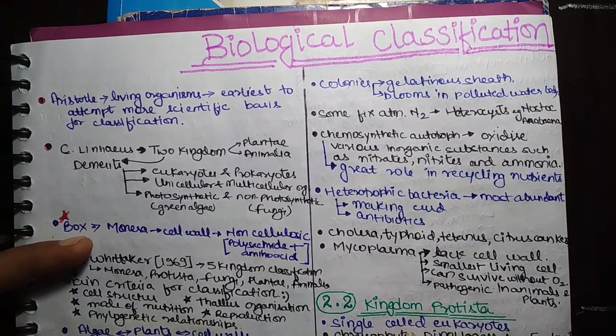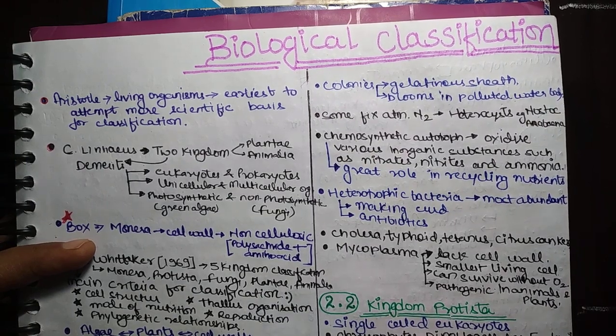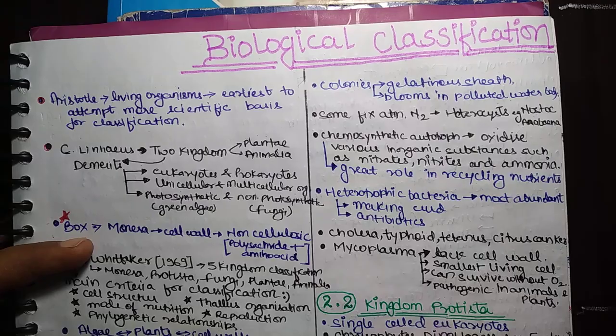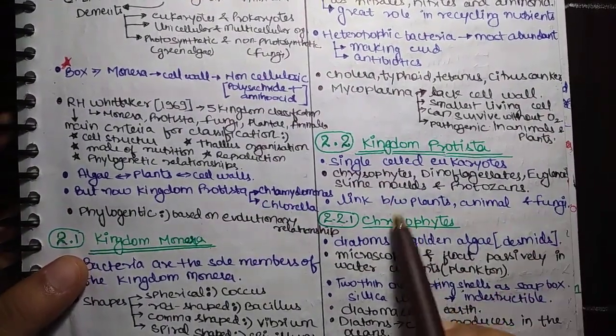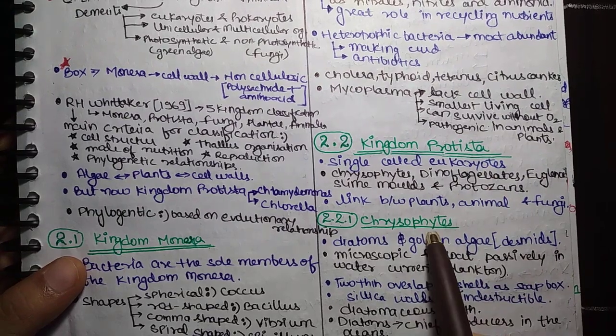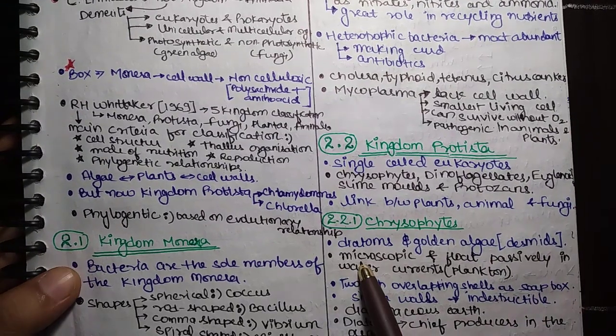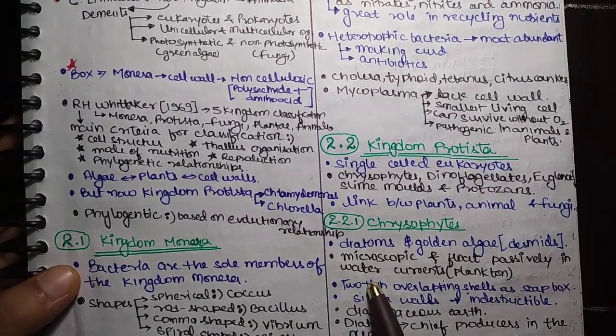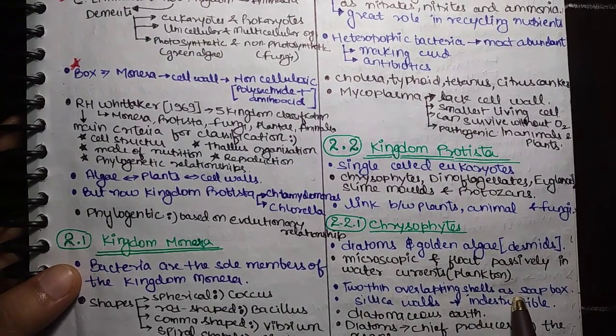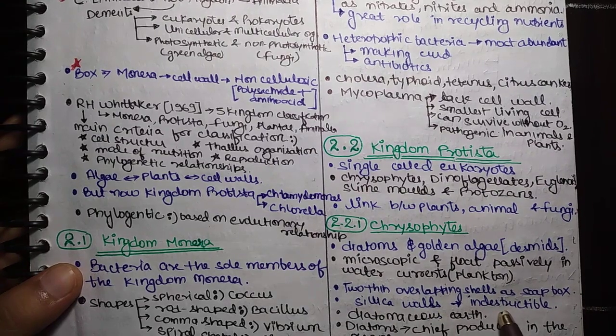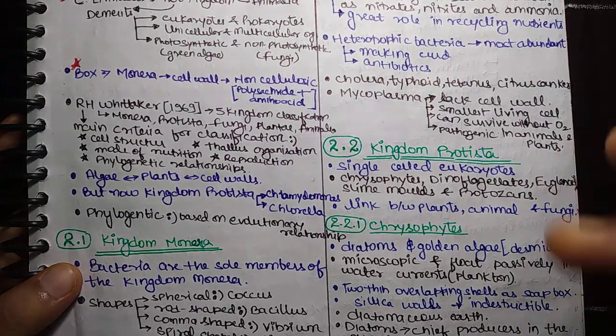Now next kingdom is Kingdom Protista. These are single-celled eukaryotes: chrysophytes, dinoflagellates, euglenoids, slime molds and protozoans. These are Kingdom Protista. Forms a link between plants, animals and fungi. First, chrysophytes, diatoms and golden algae. They are microscopic and float passively in water currents. This is called planktons. Two thin overlapping shells as a soap box. Silica walls, indestructible, diatomaceous earth.